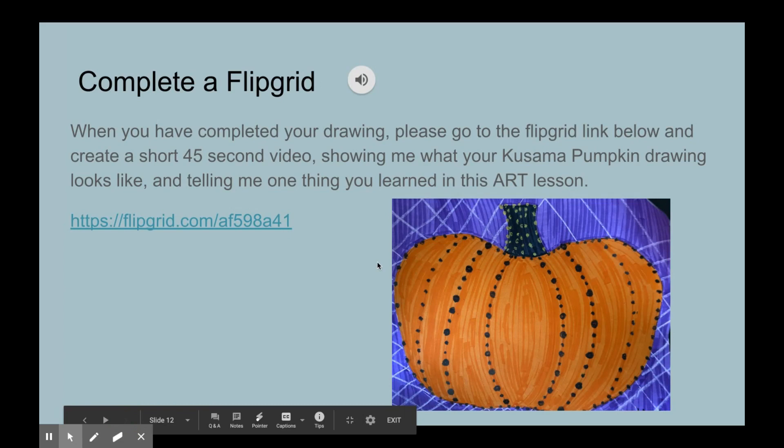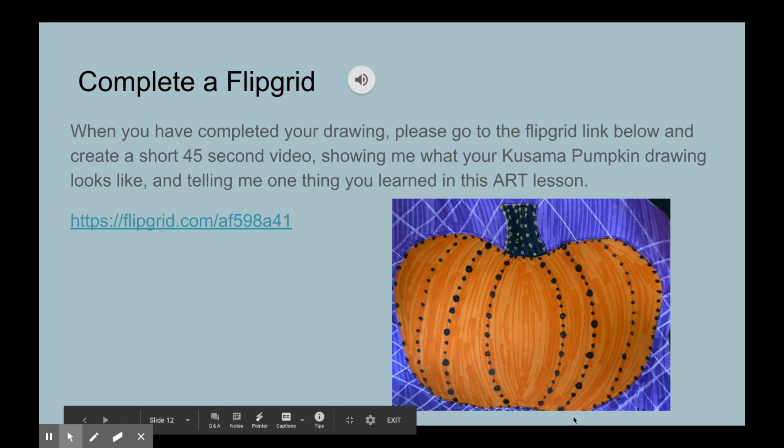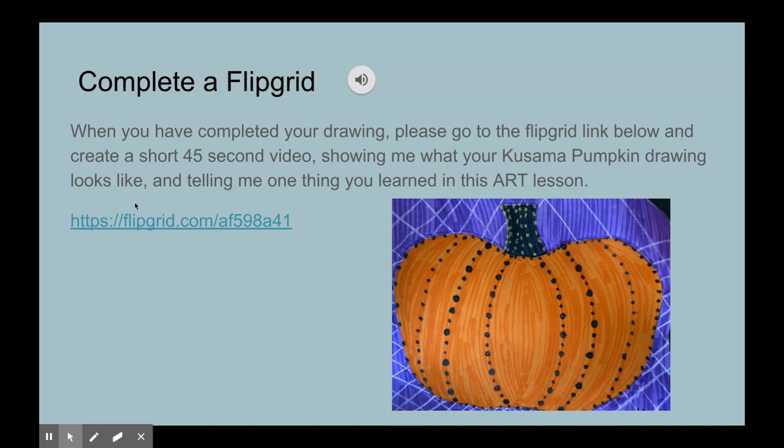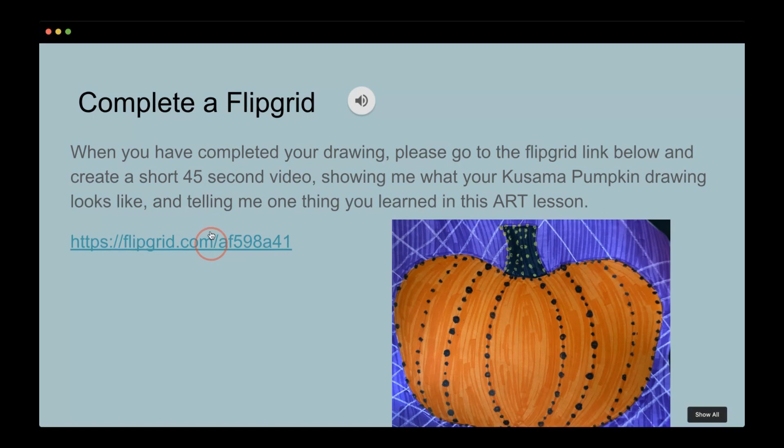Okay, so the very last step of this art project is for you to complete a Flipgrid. When you have completed your pumpkin and it looks something similar to what you see here on this page, you are going to go to this link below where it says the codes and click on the Flipgrid link. It's going to bring you here to the Flipgrid page and you are going to click on this play button to watch the video to get the directions of what you're supposed to do. Then when you're done watching that video, you'll click on this record a response button. You will then follow the directions to create your video, and when you're done, submit it. Then I will get to see your artwork and meet you. I'm so excited to be able to work with you and create art with you. So have fun.